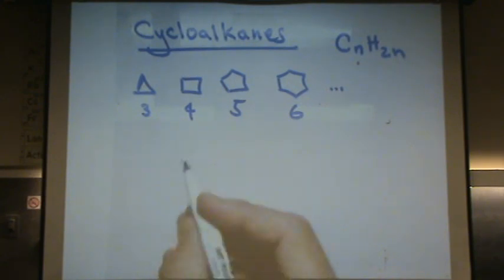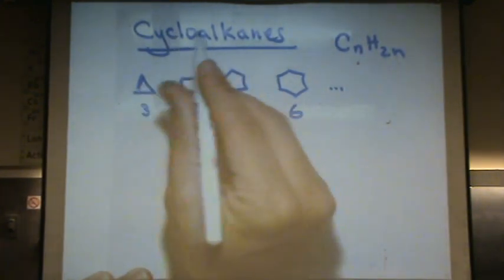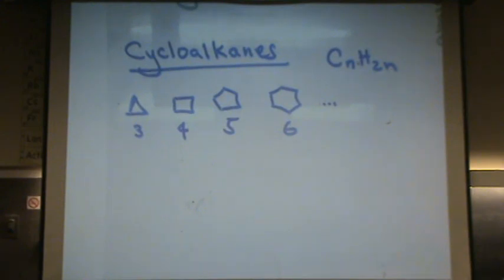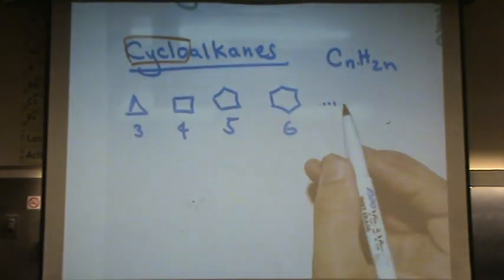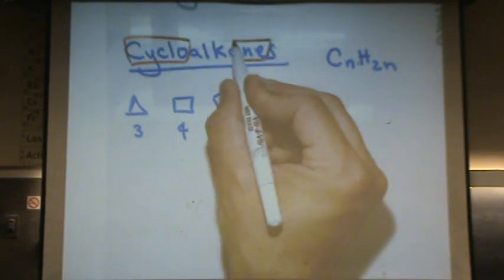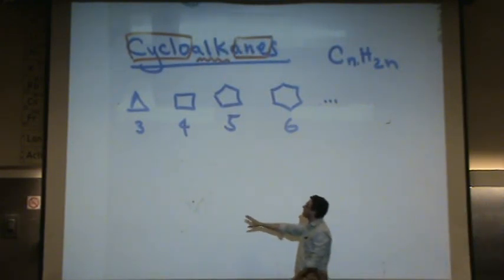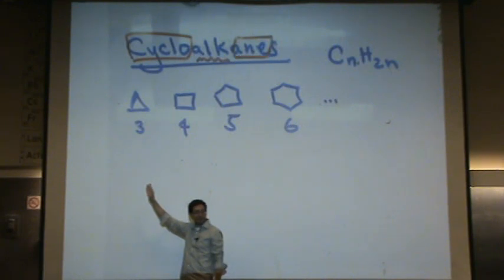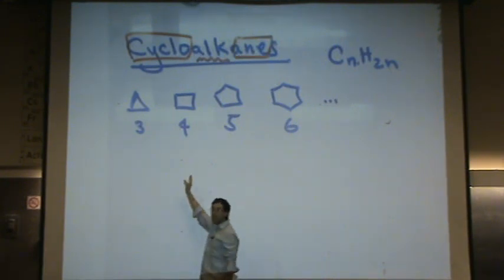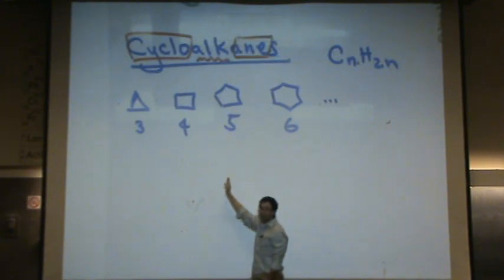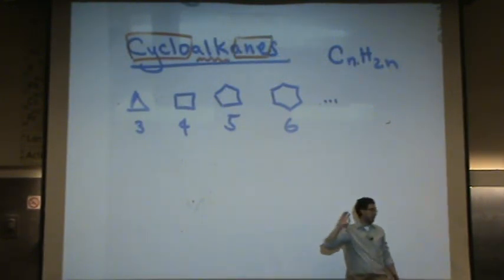These are named as follows. You've got cyclo as your prefix and your suffix is -ane. The middle part, alk, is your prefix for the organic. For example, the first one is cyclopropane - pro for three. The second one is cyclobutane, cyclopentane, cyclohexane, etc. So it's cyclo, the prefix for the organic, and then -ane. Cycloheptane, cyclooctane, etc.